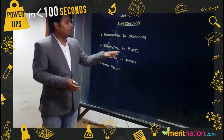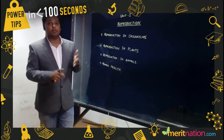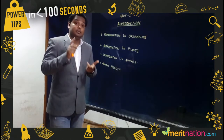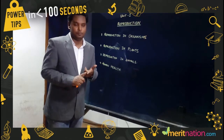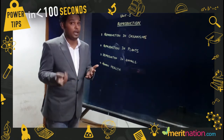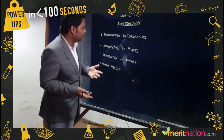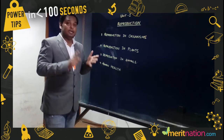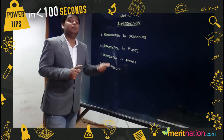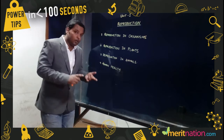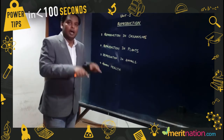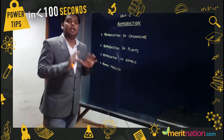When we come to Reproduction in Plants, there are some very important topics like pollination, and some very important diagrams — the flower, seed, monocot and dicot seed. Reproduction in Animals is also important because both theory and diagrams appear in your examination.